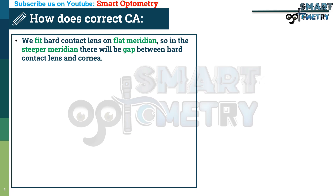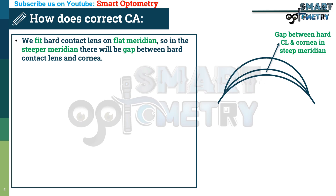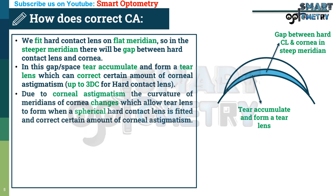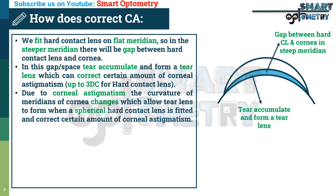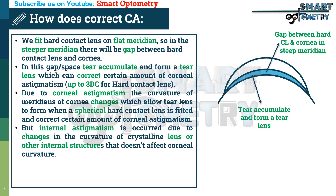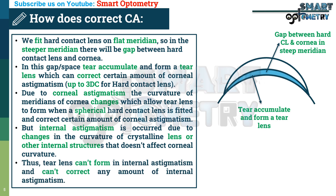Why can a hard contact lens not correct even a very small amount of internal astigmatism, yet can correct up to 3 D of corneal astigmatism? We fit a hard contact lens on the flat meridian, so in the steeper meridian there will be a gap between the hard contact lens and the cornea. In this gap, tears accumulate and form a tear lens which can correct a certain amount of corneal astigmatism — up to 3 D cylinder for hard contact lenses. Due to corneal astigmatism, the curvature of the corneal meridians changes, allowing the tear lens to form when a spherical hard contact lens is fitted on flat K and correct corneal astigmatism. But internal astigmatism is caused by changes in the curvature of the crystalline lens or other structures that do not affect corneal curvature. Thus, the tear lens cannot form in internal astigmatism and cannot correct any amount of internal astigmatism.